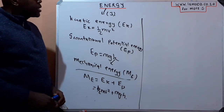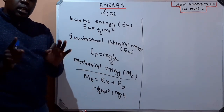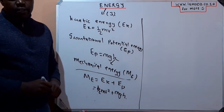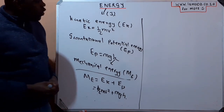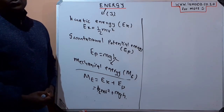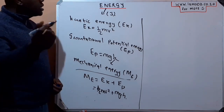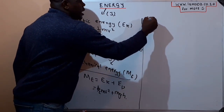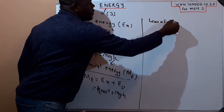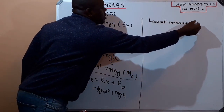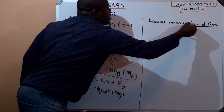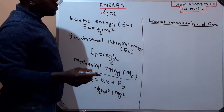Now, you deal with an isolated system, meaning a system that does not have friction. If you have that type of system, your mechanical energy is going to be conserved, which is known as the law of conservation of mechanical energy. It states that in an isolated system, the total mechanical energy is conserved — it remains constant. This is the principle of conservation of mechanical energy.